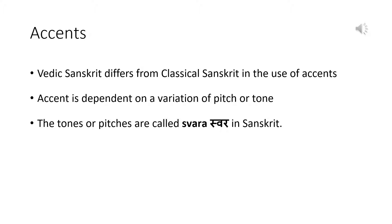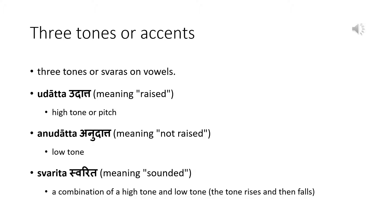The tones or pitches are called svara in Sanskrit. There are three tones or svaras on vowels: the udātta meaning raised, the anudātta meaning not raised, and the svarita meaning sounded. The udātta is a high tone or pitch. The anudātta is a low tone and the svarita is like a circumflex accent — it is a combination of a high tone and a low tone. The tone rises and then falls.